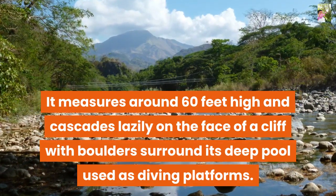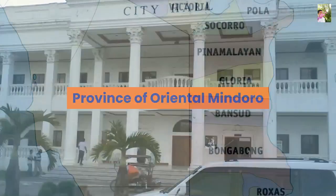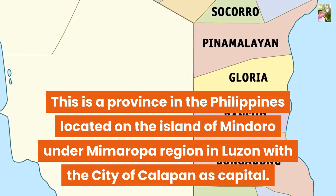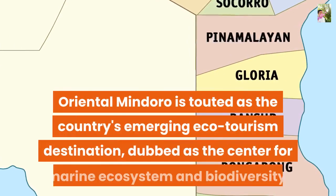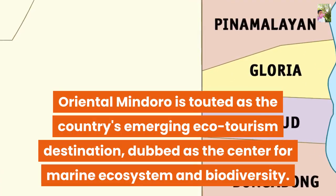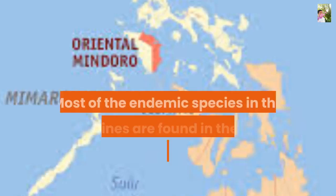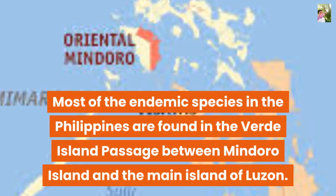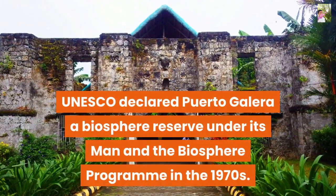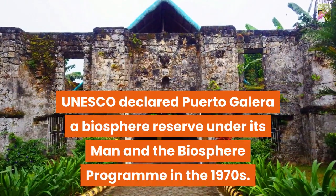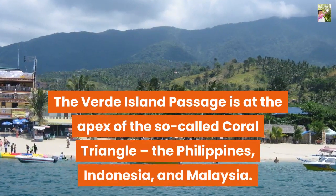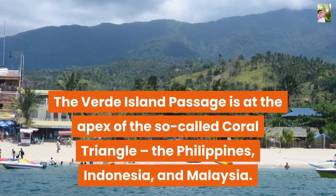The Province of Oriental Mindoro is located on Mindoro Island under MIMAROPA Region in Luzon, with the City of Calapan as capital. Oriental Mindoro is touted as the country's emerging eco-tourism destination, dubbed the center for marine ecosystem and biodiversity. Most endemic species in the Philippines are found in the Verde Island Passage between Mindoro Island and the main island of Luzon. UNESCO declared Puerto Galera a Biosphere Reserve under its Man and the Biosphere program in the 1970s. The Verde Island Passage is at the apex of the so-called Coral Triangle — the Philippines, Indonesia, and Malaysia.